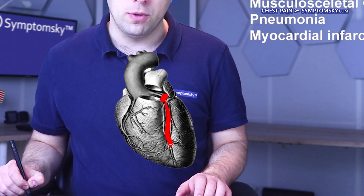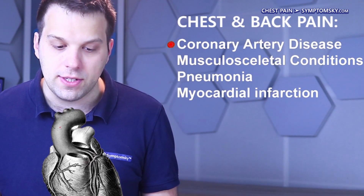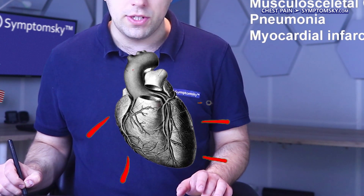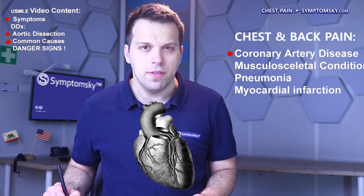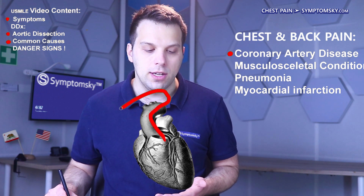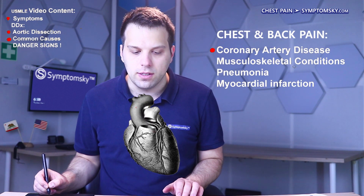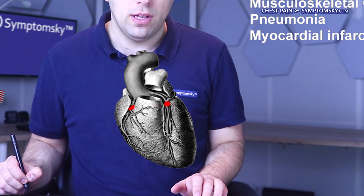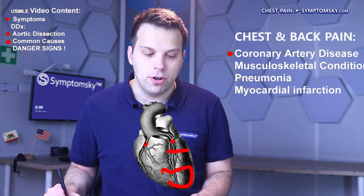If one of those arteries has a stenosis, it can cause the heart not to function properly because it doesn't get enough blood. What helps us distinguish this condition — coronary artery disease — from others is that the chest pain produced by a coronary artery stenosis can radiate into the neck, back, and arms. These symptoms usually happen when we are physically or emotionally stressed. Coronary artery disease is a chronic condition.